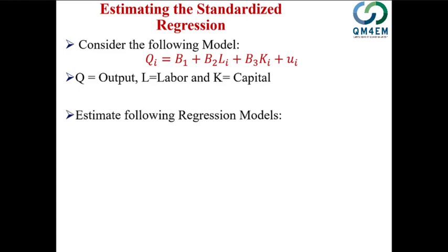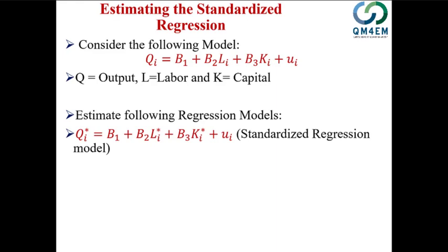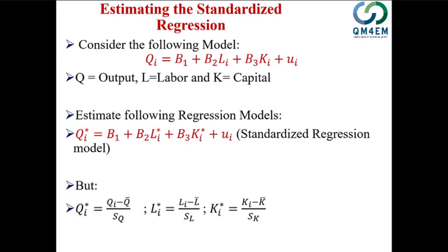When we estimate the regression model in standardized form, we represent it with a star notation. Q*_i equals Q_i minus Q-bar divided by S_Q, where Q-bar is the mean value of output and S_Q is the standard deviation of output. Similarly, L*_i equals the labor value minus the average of labor divided by the standard deviation of labor. Likewise, K*_i equals the individual capital value minus the mean of K divided by the standard error of K.